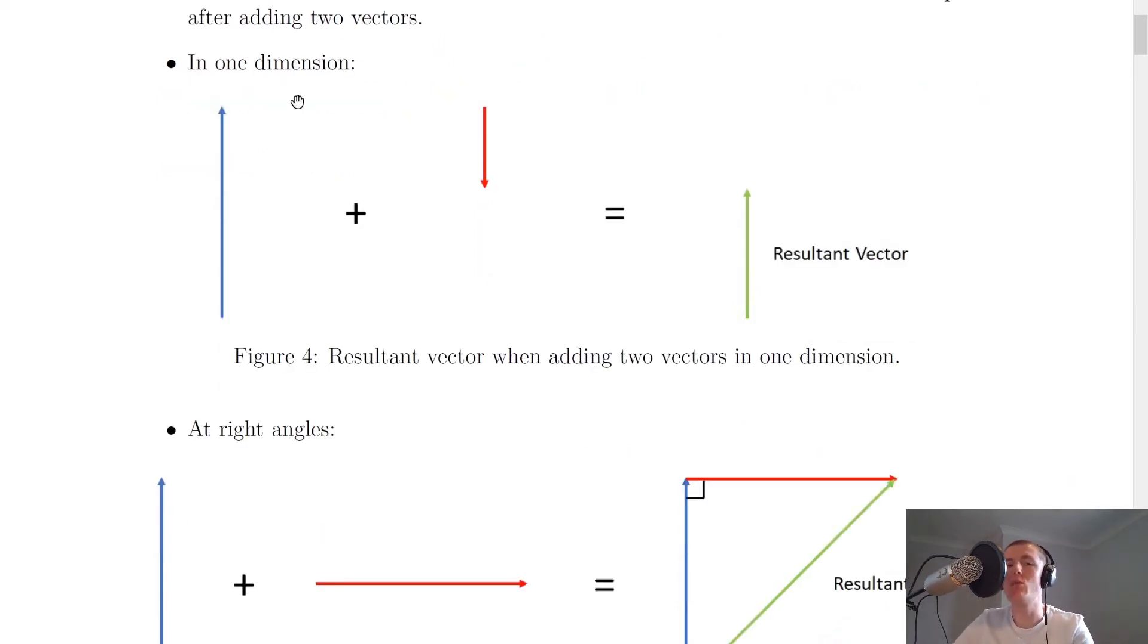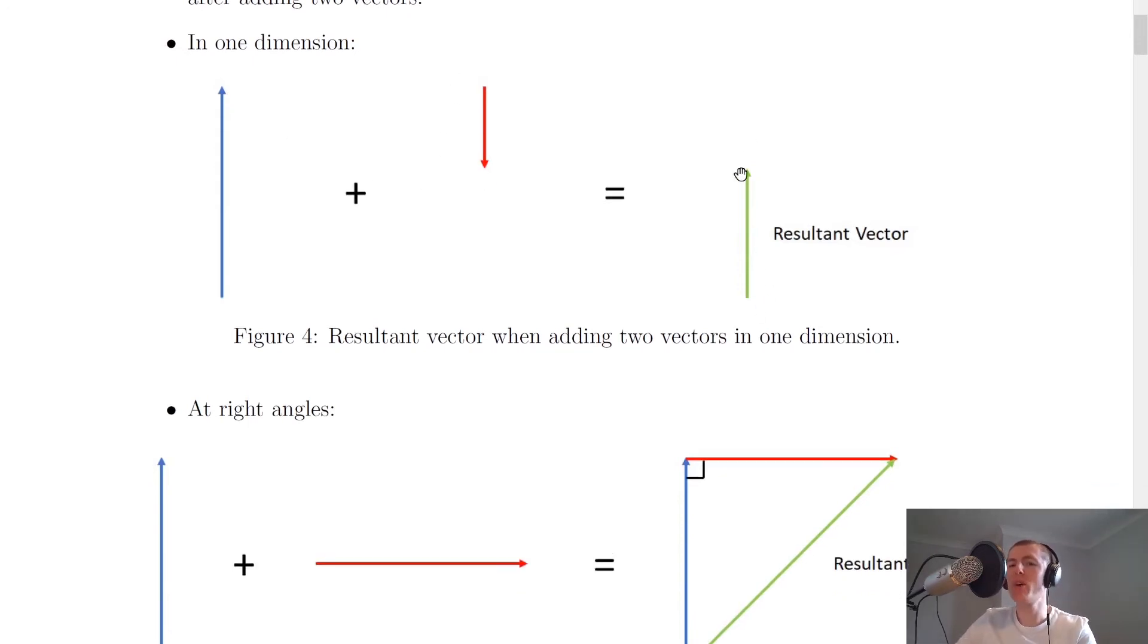So if we take our example from before, in one dimension, we add this vector to this vector, and we get out this resultant vector. And the reason it's pointing in this direction and it's only this length, is that if we go back to our first example,